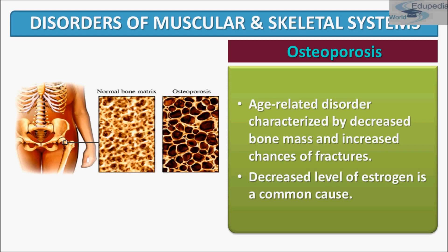Normal bone is composed of protein, collagen, and calcium, all of which give strength to the bone. Bones affected by osteoporosis can break with relatively minor injury that normally would not cause a fracture. The fracture can be either in the form of cracking or collapsing. The spine, hips, ribs, and wrist are the common areas of bone fracture from osteoporosis, although osteoporosis-related fractures can occur in almost any skeletal bone.